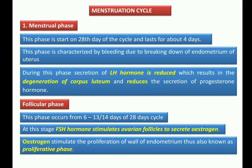The first key point: it starts from day one of the cycle and lasts for about four days. Second point: this phase is characterized by bleeding due to the breakdown of the endometrium of the uterus. The endometrium is the innermost wall of the uterus; when it breaks down and degenerates, bleeding occurs.